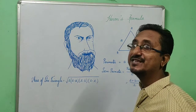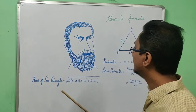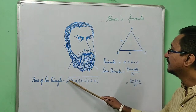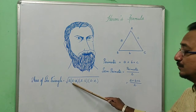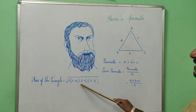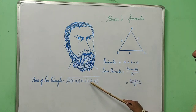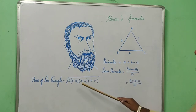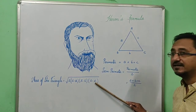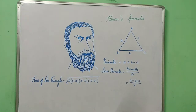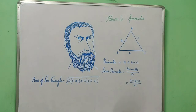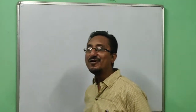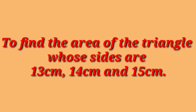Heron has derived the area of a triangle formula as: Area = √(S × (S−a) × (S−b) × (S−c)), where a, b, and c represent the sides of the triangle and S represents the semi-perimeter of the triangle.